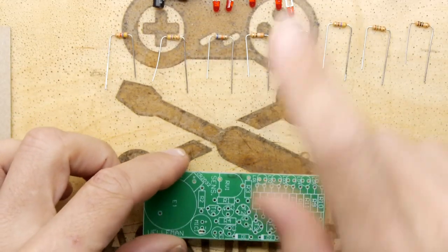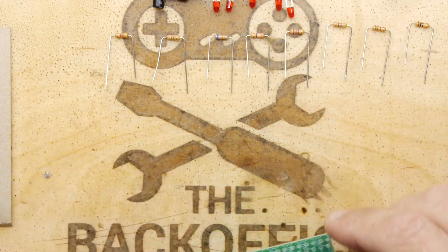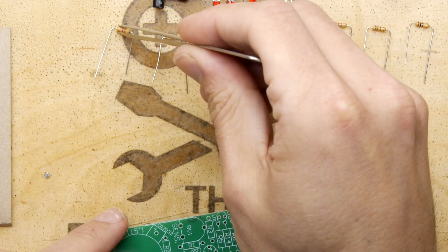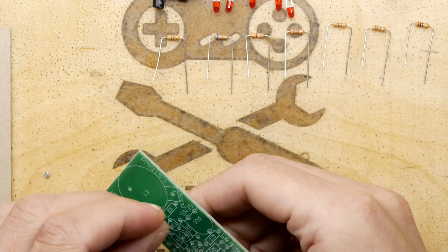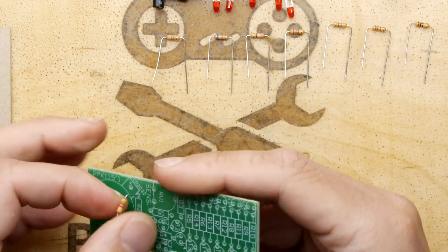And then we're going to have to populate R1. And we look on our diagram, which is just off camera. And it says R1 is 4K7, which is yellow, purple, red. And actually that happens to be one that I've put out here in the first position. We're just going to pop the R1 in. And while I'm doing that, I'm trying to look, oh, I put it in the R2 slot.